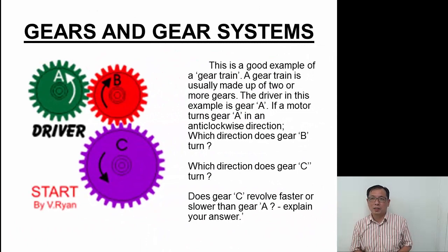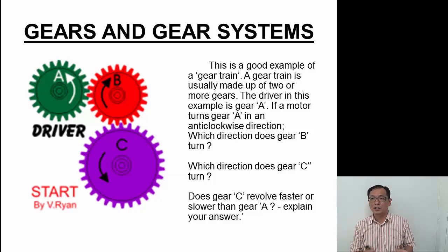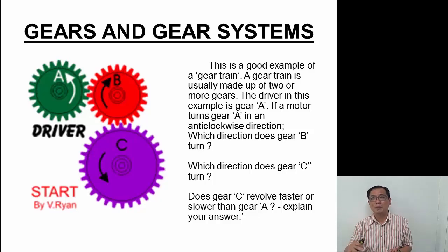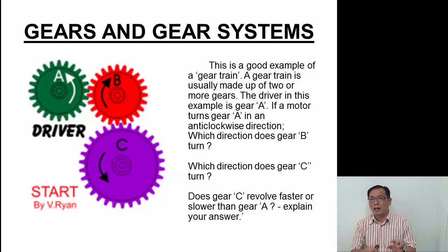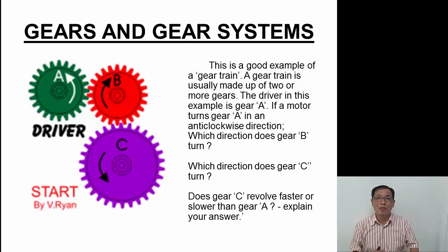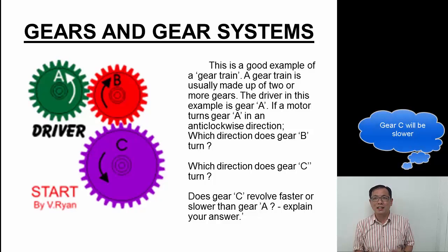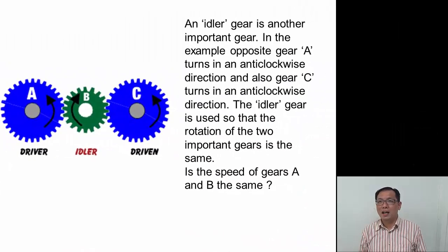When we have two or more gears, this is what we call a gear train. If gear A turns anti-clockwise, gear B turns clockwise, and as gear B turns clockwise, gear C turns anti-clockwise. Now, will gear C revolve faster than gear A? In this case, gear C will revolve slower because there are more teeth on gear C compared to gear A.